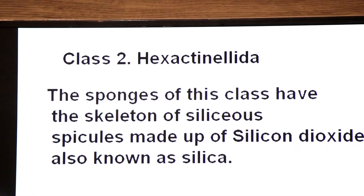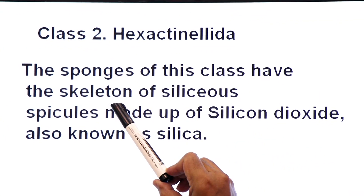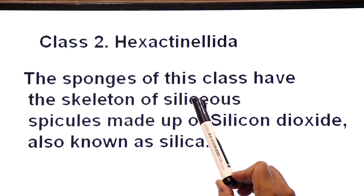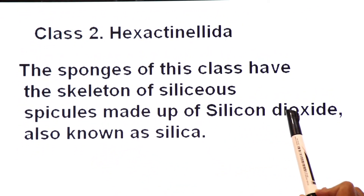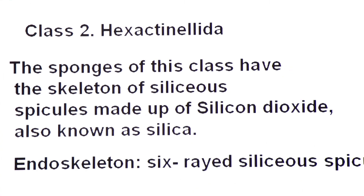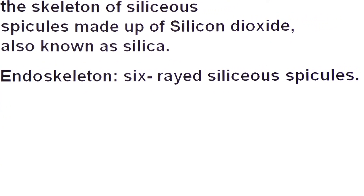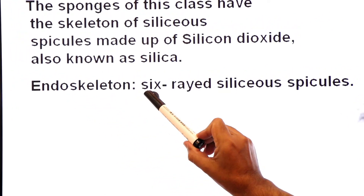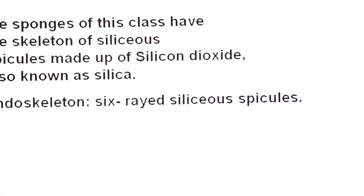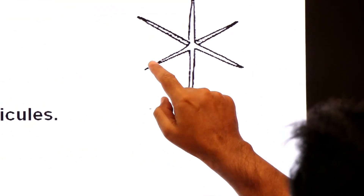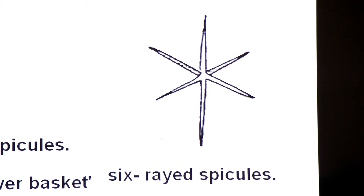Class 2: Hexactinellida. Sponges of this class have a skeleton of siliceous spicules made up of silicon dioxide, also known as silica. 'Hexa' means six and 'actinellida' means rays, so their endoskeleton consists of six-rayed siliceous spicules. Example: Euplectella, commonly known as Venus' flower basket.